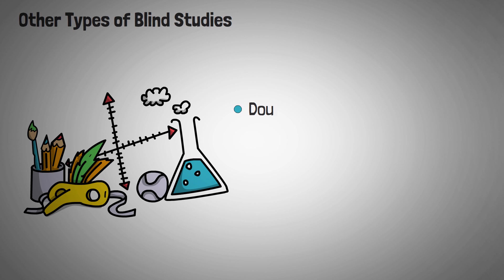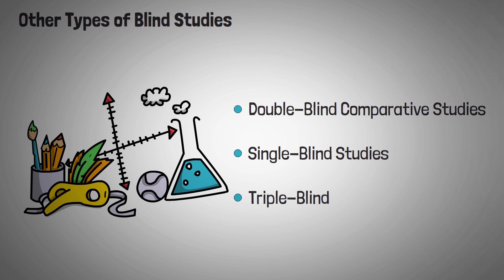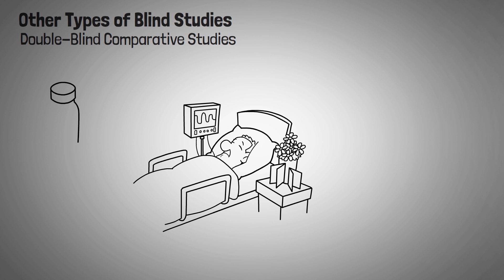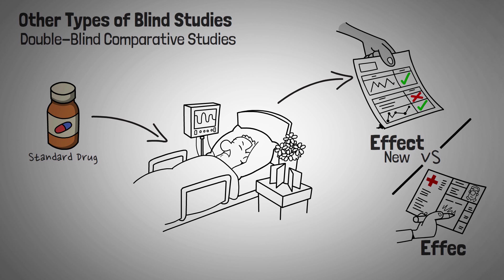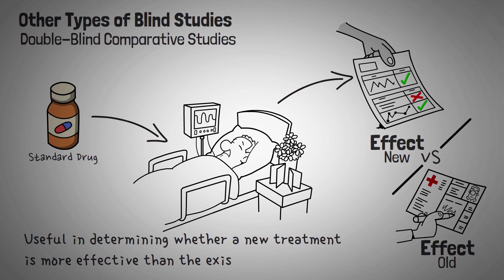Next up, I want to talk about some differences or variations of blind studies. There are several different types of blinding in research, such as double-blind comparative studies, single-blind studies, and even triple-blind studies. In double-blind comparative studies, one group of participants is given a standard drug instead of a placebo. These studies compare the effects of new medicine with an old one whose impact has already been proven. This kind of study is useful in determining whether a new treatment is more effective than an existing one.